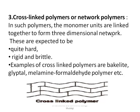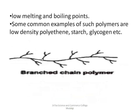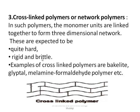The third type based on structure is cross-linked polymers, also known as network polymers. In such polymers, monomer units are linked together to form a three-dimensional network with cross linkages between linear chains. The properties of cross-linked polymers are that they are quite hard, rigid, and brittle. Examples include Bakelite, Glyptal, and melamine-formaldehyde polymer.